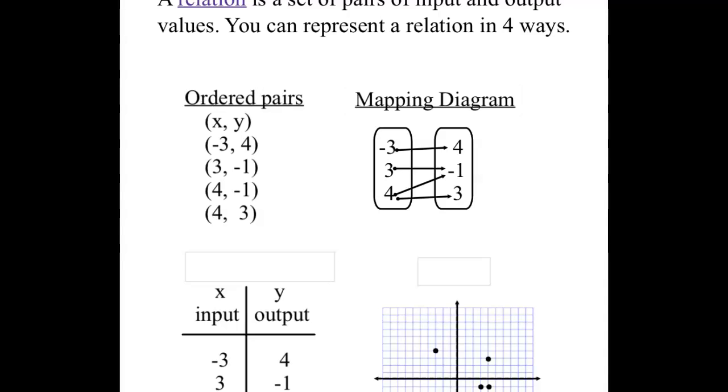We can show them as a mapping diagram. In a mapping diagram, we have the same information we had as an ordered pair, but we've condensed it down. Notice on this one that the four is being paired up with a negative one and a three. We can show that on our mapping diagram with our arrows, so we don't have to write the four twice.